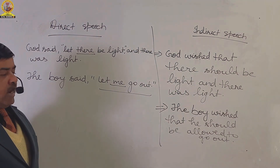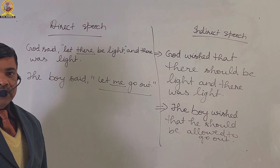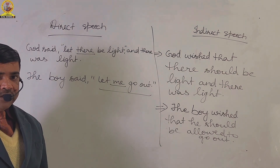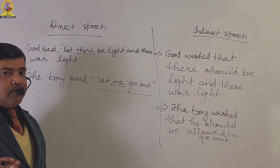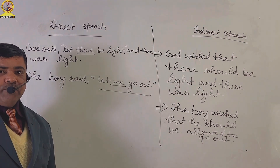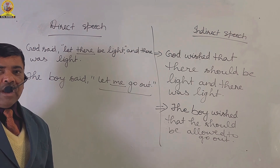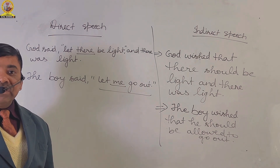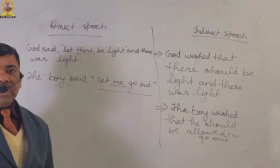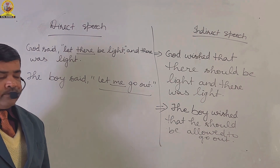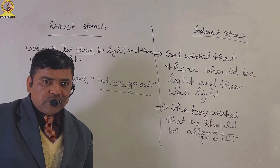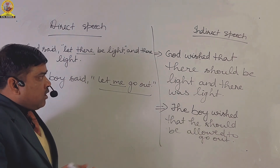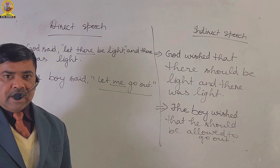'Let there be light' — मतलब प्रकाश हो. God said, 'Let there be light, and there was light.' ये भगवान ने कहा कि प्रकाश हो और प्रकाश हुआ. अर्थात भगवान ने प्रकाश के होने की इच्छा व्यक्त की और प्रकाश उत्पन्न हो गया. So, the indirect speech of the sentence given in direct speech is: God wished that there should be light and there was light.